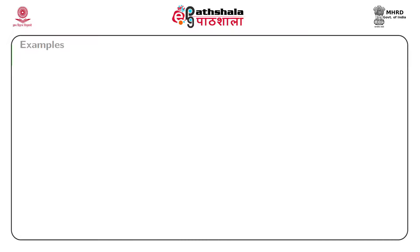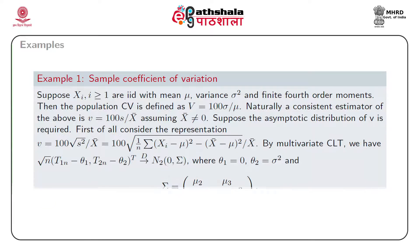Suppose x_i are iid with mean mu and variance sigma squared, and we assume that the fourth order moments are finite. The population coefficient of variation is defined as capital V equal to 100 times sigma divided by mu. Naturally a consistent estimator is small v, which is 100 times S divided by x-bar, assuming x-bar not equal to 0, where S is the sample standard deviation and x-bar is the sample mean.